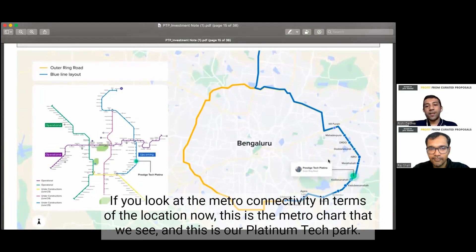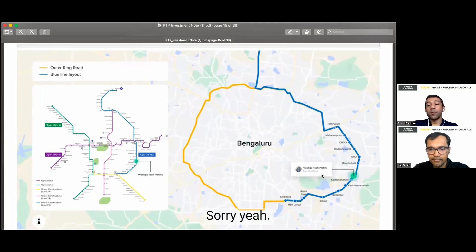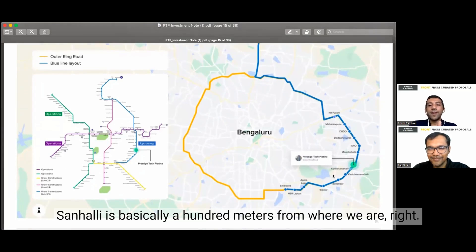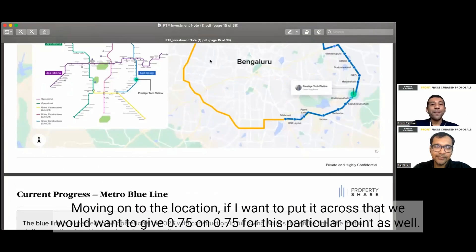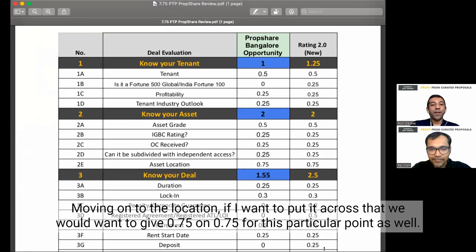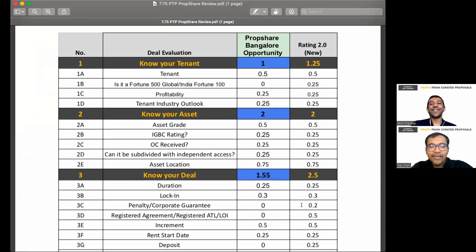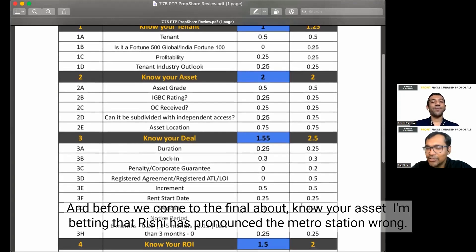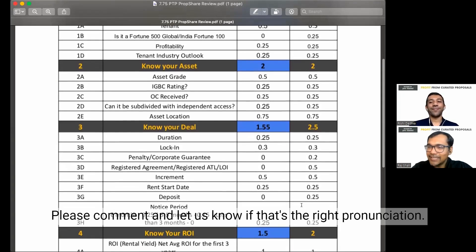If you look at the metro connectivity in terms of the location. Now, this is the metro chart that we see. And this is our Platina Tech Park, Prestige Platina Tech Park. And the metro station that is Tanahali is basically 100 meters from where we are right now. Moving on to the location, we would want to give 0.75 on 0.75 for this particular point as well. And before we come to the final about Know Your Asset, I'm betting that Rishi has pronounced the metro station wrong. Please comment and let us know if that's the right pronunciation.